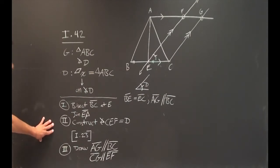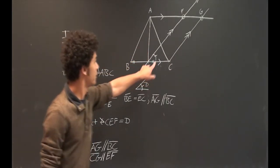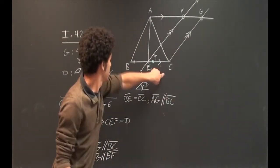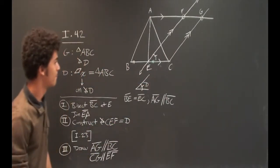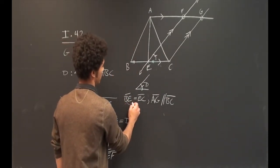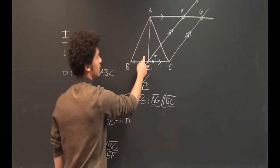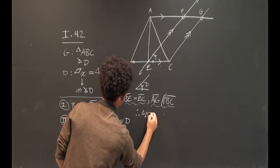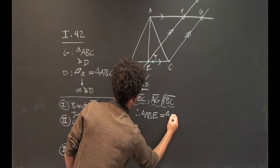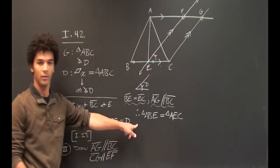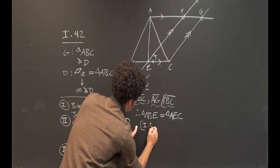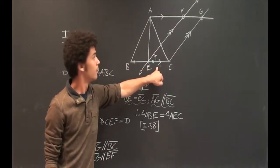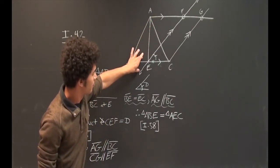This completes the construction. Now I'll show you the logic to demonstrate that parallelogram FECG fulfills the requirements — that it is equal in area to triangle ABC and was constructed on an angle equal to D. From what we've established, triangle ABE is equal to triangle AEC. This is true by Proposition I.38, which tells us that two triangles with equal bases BE and EC within the same parallels AG and BC will be equal to each other in area.